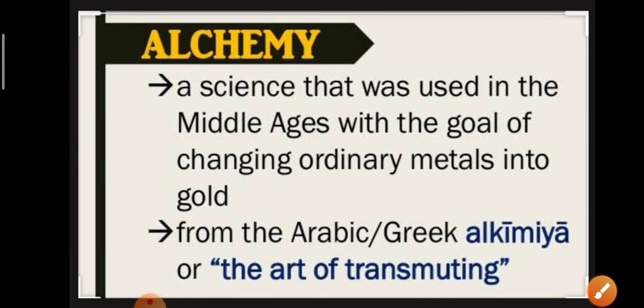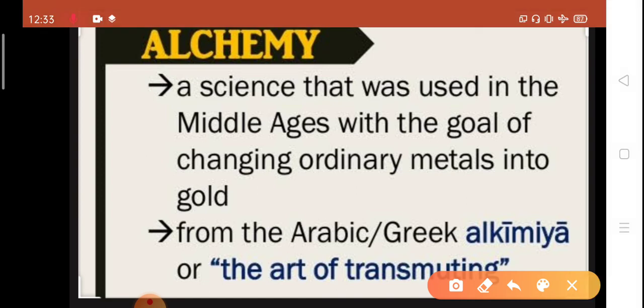Now, what is the meaning of alchemy? It is a science that was used in the Middle Ages with the goal or intention of changing ordinary metals into gold. This word came from the Arabic or Greek word alchemy, which means the art of transmuting.